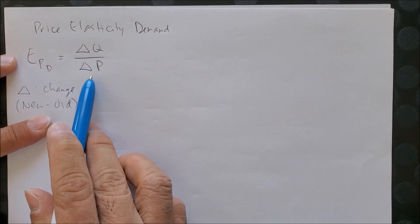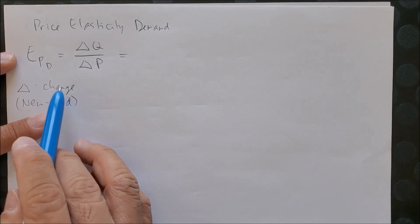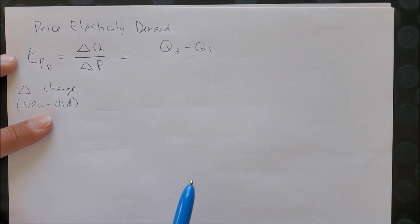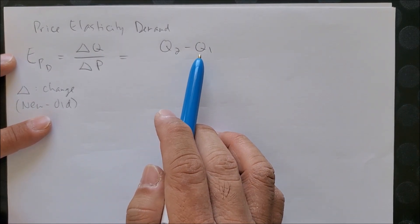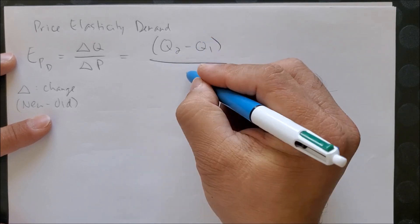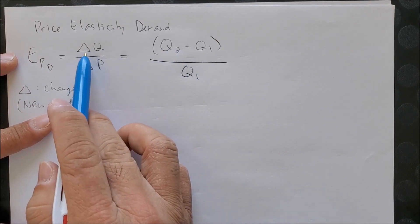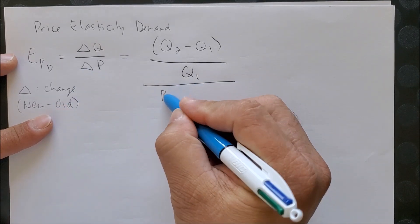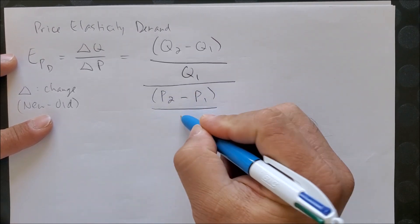This equation can then be extended as the following. The change in quantity can now represent the change new minus old by taking q2 minus q1. So notice how q2 is the newer quantity, q1 is the older quantity. So now we have q2 minus q1 over q1. And this represents the change in quantity. At the same time, for price, do the same thing. We have the new price minus the old price, parentheses over the old price.